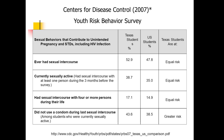However, those who did not use condoms during the last sexual intercourse — among students who were sexually active — were higher in Texas at 43.6% versus U.S. students at 38.5%. So this left Texas students at greater risk.